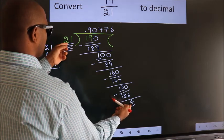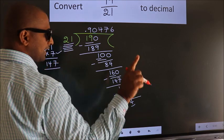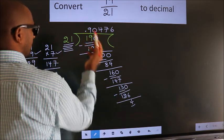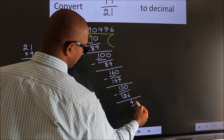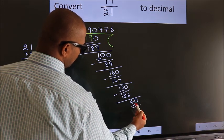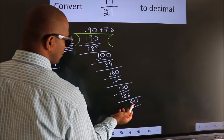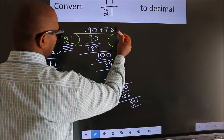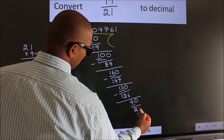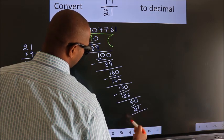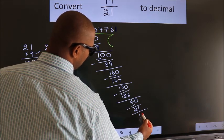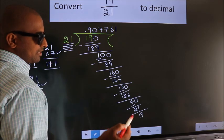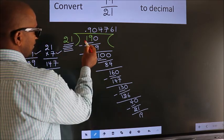4 is smaller than 21, and we already have the decimal, so we can directly take 0, giving us 40. A number close to 40 in the 21 table is 21 × 1 = 21. Now we subtract and get 19.